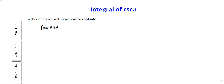We just finished a series of videos on the integral of various powers of the secant function, and now we're going to show how to integrate the cosecant function, which is done almost analogously to the secant one. The difference is that the function is different so its derivatives are slightly different, but the form is very much the same.